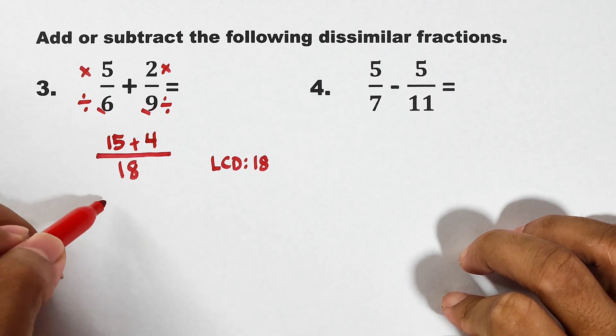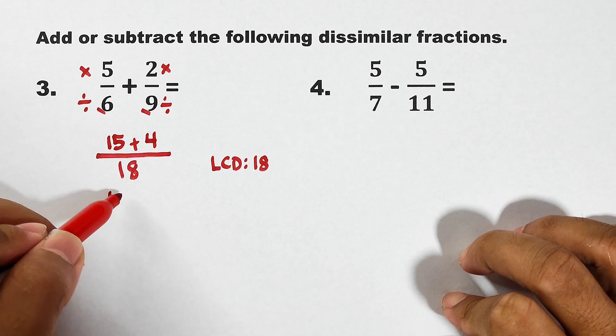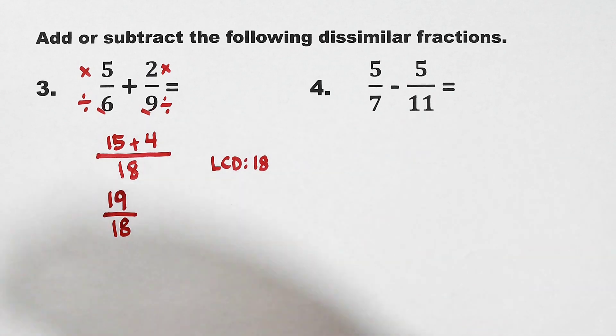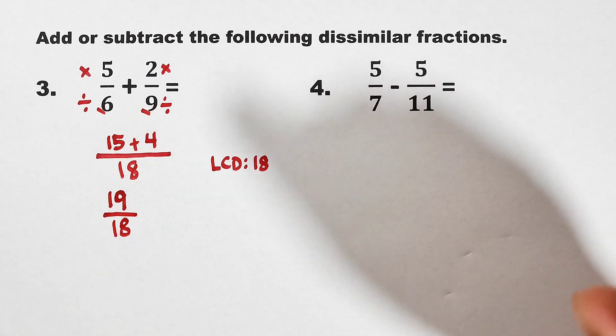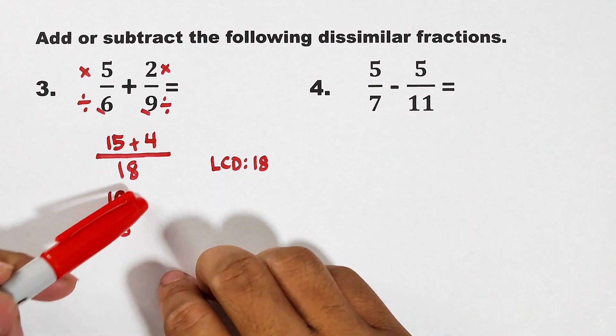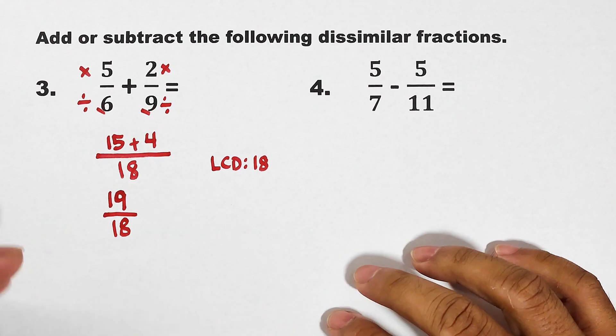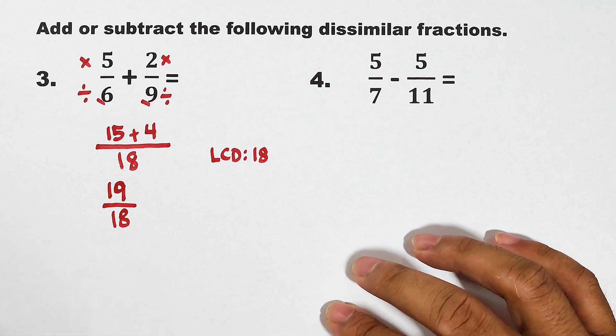At the numerators, we have 15 plus 4, which is 19. Copy your 18. And as you can see, in our answer, we have 19 over 18, which is an improper fraction because the numerator is greater than the denominator. So, what we need to do is we need to convert this into mixed number. By the way, the improper fraction of this, I will convert it already. This one is equal to 1 and 1 over 18.